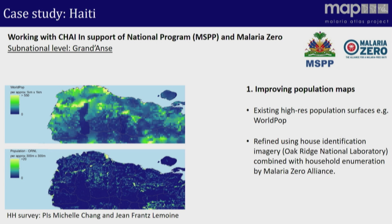One thing we wanted to do was improve the underlying map of population distribution, which is one of the critical ingredients in getting catchment populations right and working out where burden lies. The top map was the WorldPop project — generally pretty good and a huge investment on what went before it — that would have been our default. But we were able to augment that because we had data from Oak Ridge National Laboratory, who had used satellite imagery to identify individual structures throughout the whole of Grand Anse, supplemented by a very detailed household enumeration carried out by the program and Malaria Zero. We fused those two data types together in a model to redistribute the population, and you can see it's really different — you get a very different picture of where people live.